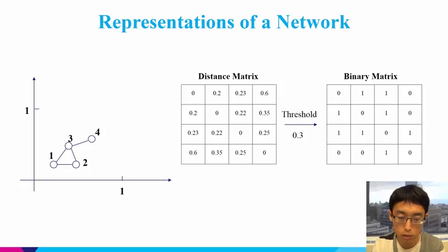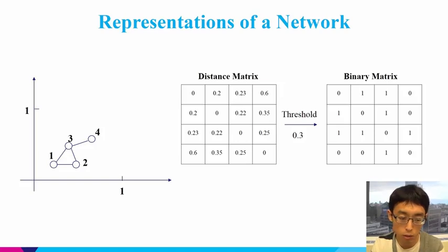When applying the threshold, you actually transform this distance matrix to a binary matrix, in which you set 1 to any distance smaller than the threshold and 0 to any distance larger than the threshold. You still set 0 on the diagonal because you don't want a node to connect to itself. If you have this binary matrix, you can construct the network from it, and reversely, when you have this network representation, you can construct the binary matrix from the network. So the binary matrix and the network are actually equivalent.